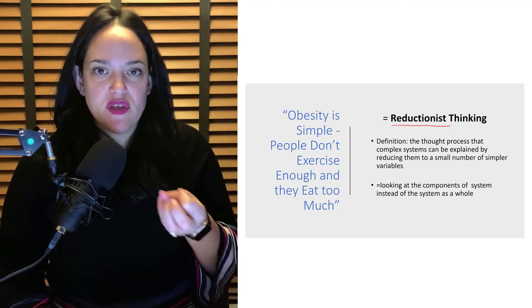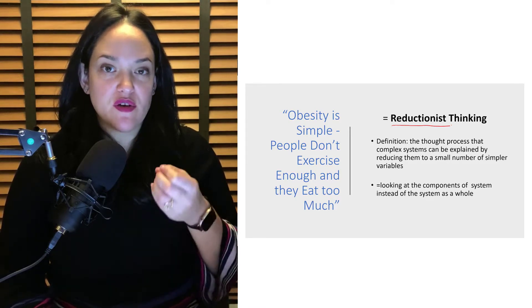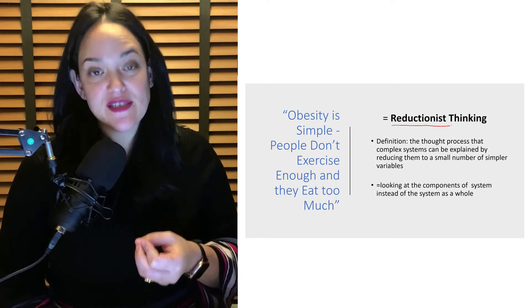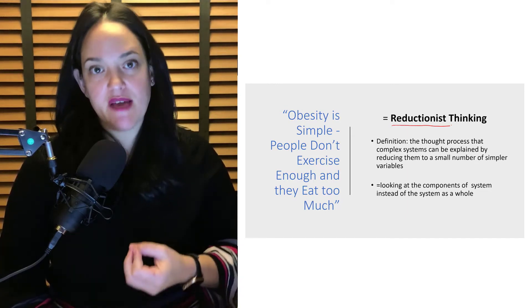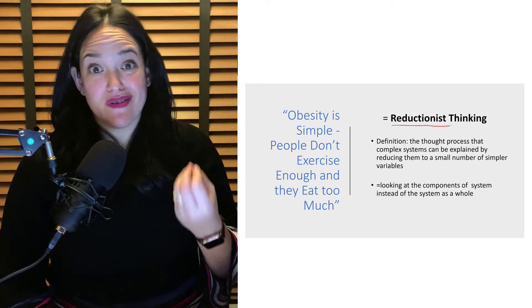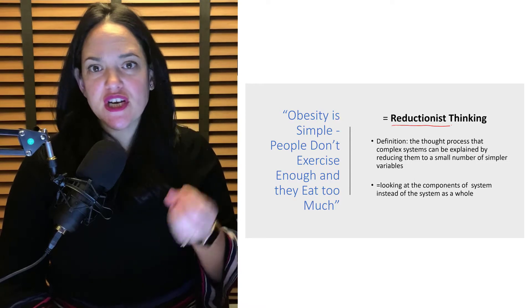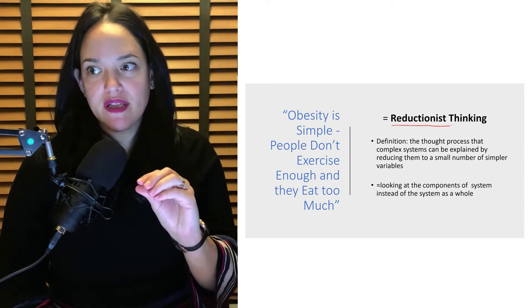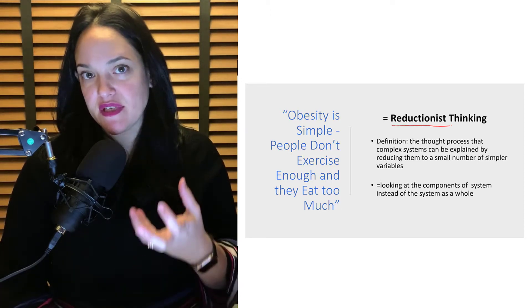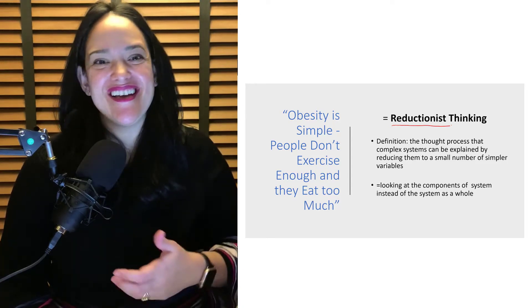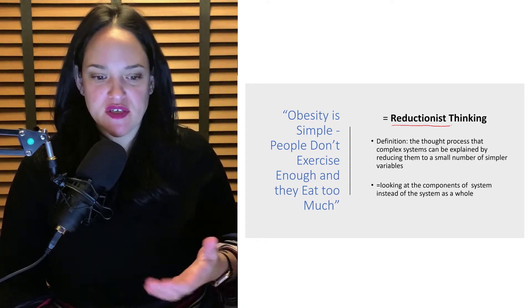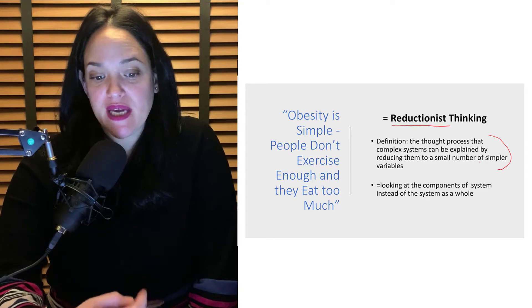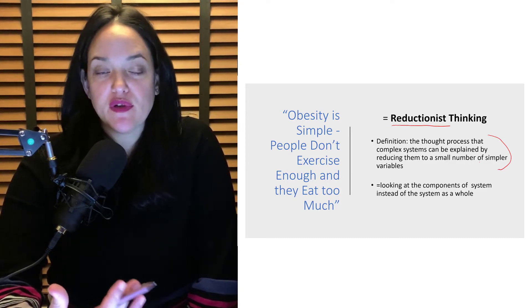One of the problems with this line of thinking is that it doesn't really address the fact that obesity is complex. The causes of obesity are complex — they're interrelated, they change over time, they're different for everyone, they're sometimes random in nature. Reducing obesity to 'people don't exercise enough and they eat too much' really dismisses the complexity of this issue, and it has failed to make a difference in actually managing the disease. Reductionist thinking is this thought process that complex systems can be explained by reducing them to a small number of simpler variables.